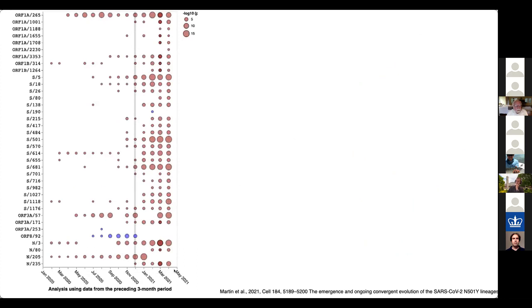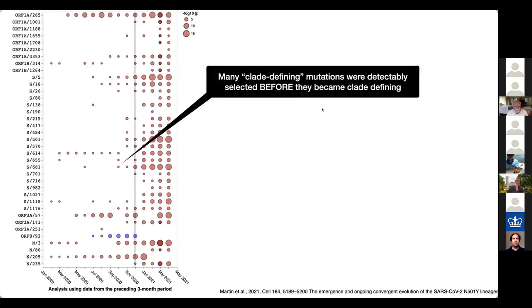In a bubble plot of individual sites over time — covering the union of all signature-defining mutations of alpha, beta, and gamma — you can see that many of these clade-defining mutations were detectably selected before they became clade-defining. For example, site 501 was detected a full month before anybody realized it was a thing. Site 681, which also became fairly dominant, was detected before that. Selection analysis seems to have a little bit of a lead time — it can detect things before they rise in frequency and before you start looking at sweeping lineages.